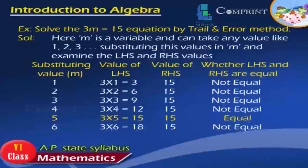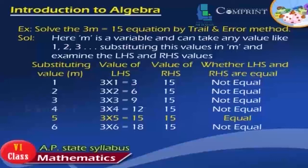When substituting m = 4: LHS = 3×4 = 12, RHS = 15. LHS and RHS are not equal. When substituting m = 5: LHS = 3×5 = 15, RHS = 15. Here, LHS and RHS are equal. When substituting m = 6: LHS = 3×6 = 18, RHS = 15. LHS and RHS are not equal.